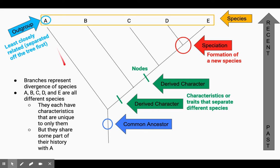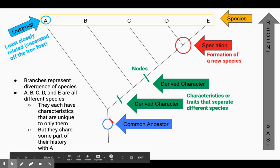So the first group I want to talk about is what we call an outgroup. So this is the least closely related species. It normally separates off the tree first. It's the first branch off of our common ancestor.